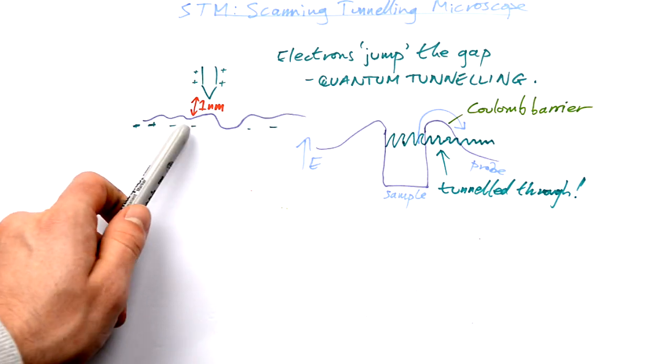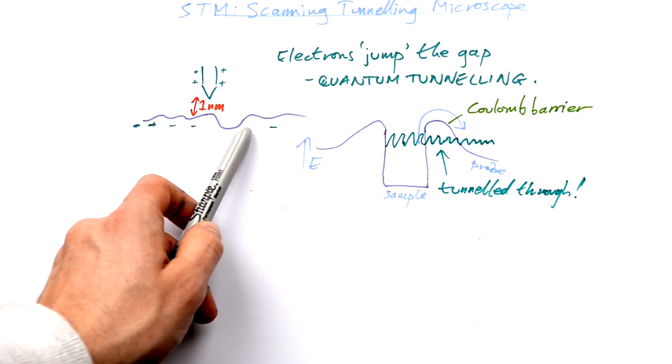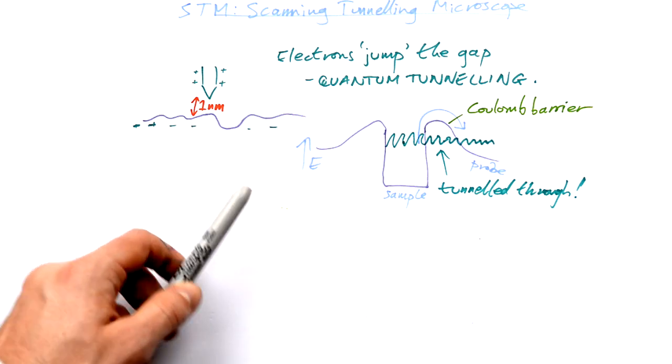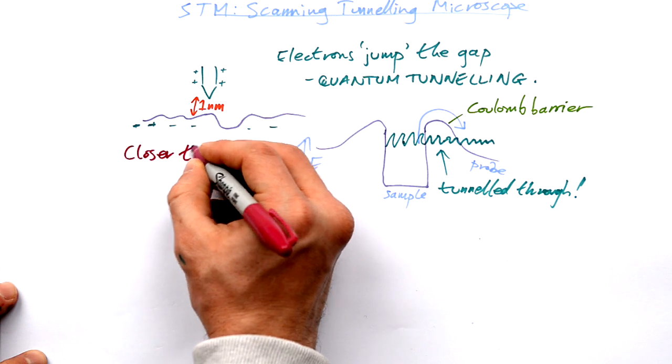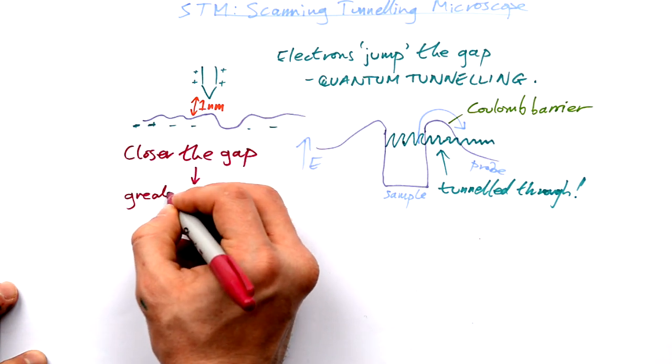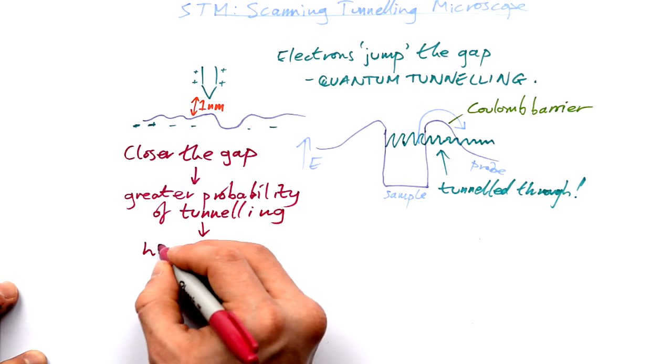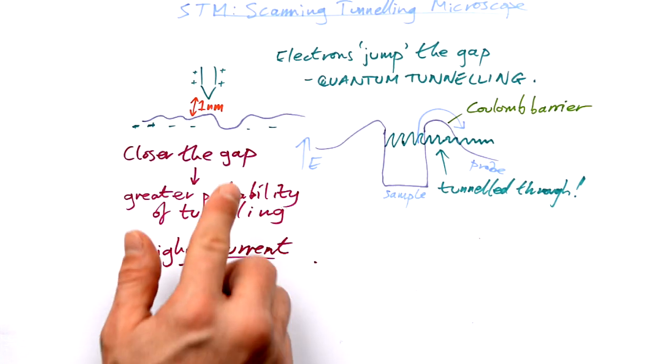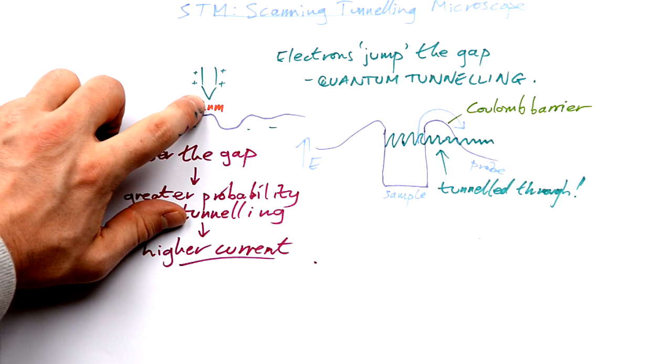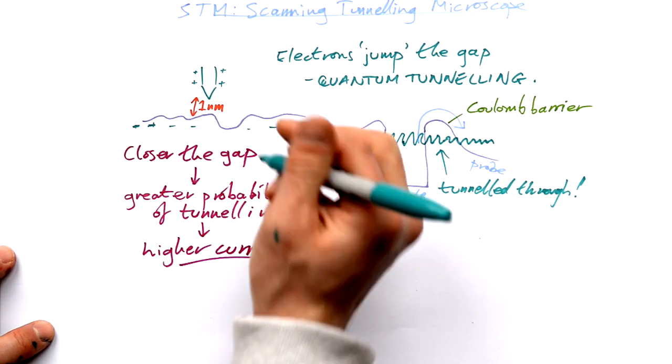So a lot of the electrons will just stay here, according to their probability. But you will get the odd electron jumping this gap to the probe. And the closer the gap, greater probability of tunneling. That means that you get a higher current. So we can measure that current and then figure out how far the tip, the probe, is away from the sample.